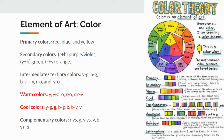The six tertiary colors are yellow-orange, red-orange, red-violet, blue-violet, blue-green, and yellow-green. The two main color schemes we focused on for this lesson are warm colors and cool colors. Warm colors include yellow, yellow-orange, orange, red-orange, red, and red-violet. Cool colors include yellow-green, blue-green, blue, blue-violet, and violet. Another color scheme is complementary colors — colors that are opposite each other on the color wheel, such as red versus green, yellow versus violet, and blue versus orange.